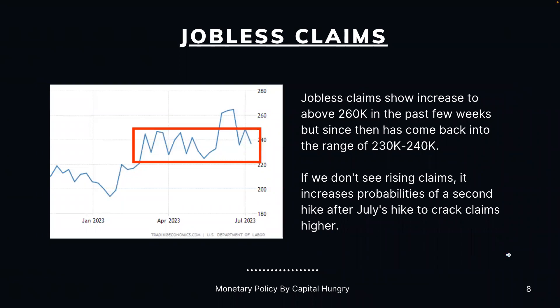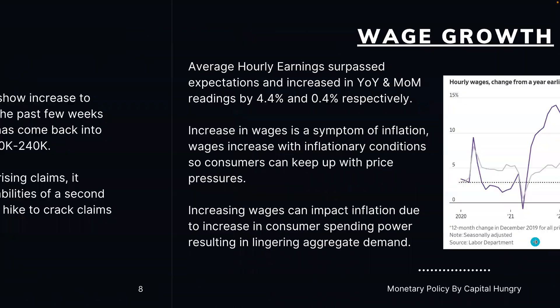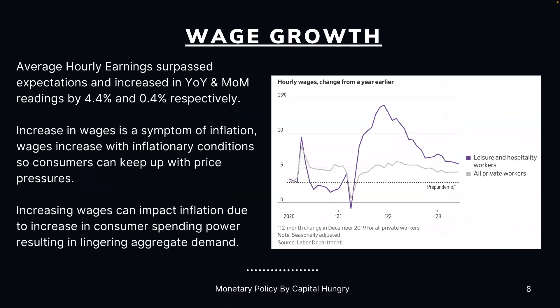Jobless claims showed increases above 260K in recent weeks but have since come back into the 230K to 240K range. If we don't see rising claims, it increases the probability of a second rate hike after July's hike to crack claims higher. Wage growth: average hourly earnings surpassed expectations, increasing year-over-year and month-over-month in June by 4.4% and 0.4% respectively. An increase in wages is a symptom of inflation — wages rise with inflationary conditions so consumers can keep up with price pressures, and higher wages can also linger aggregate demand. Compared to pre-pandemic levels, hourly wages are still trending higher.